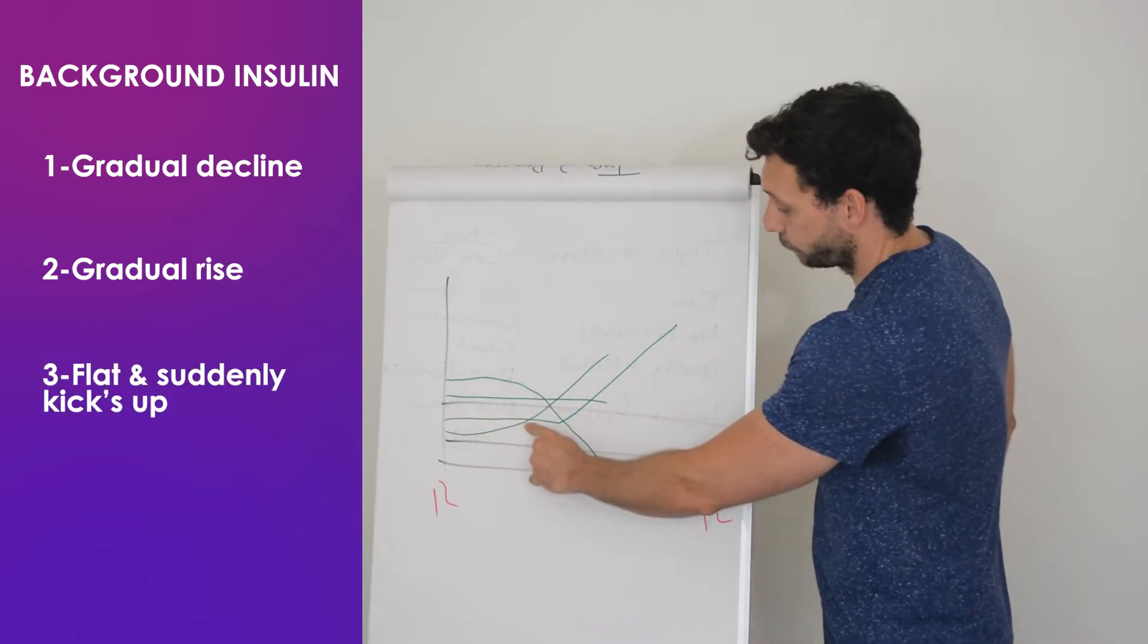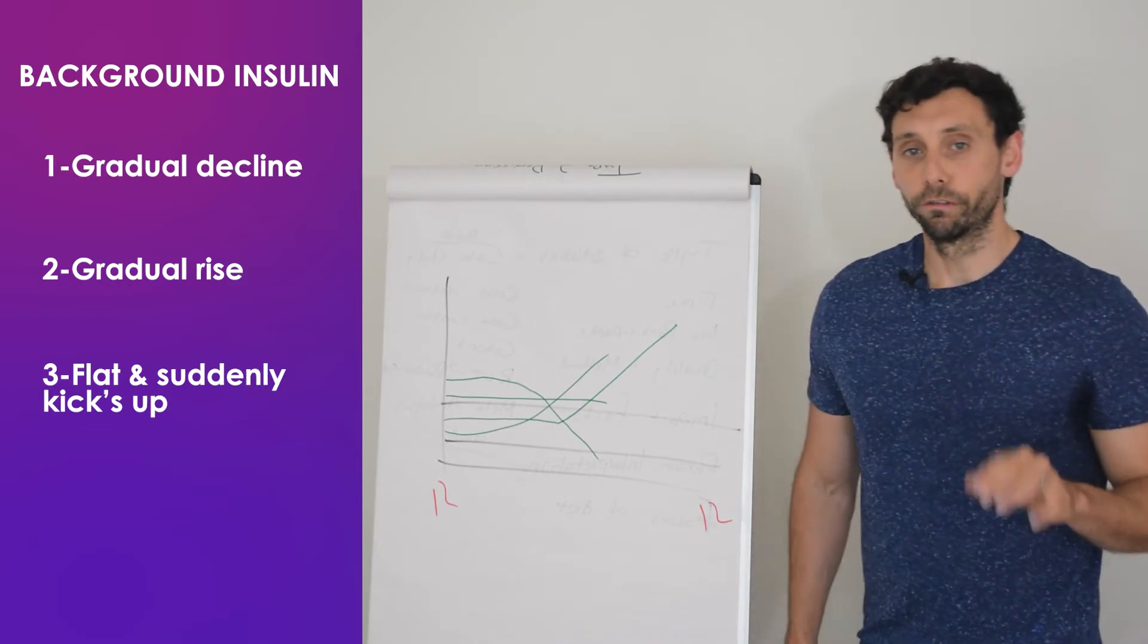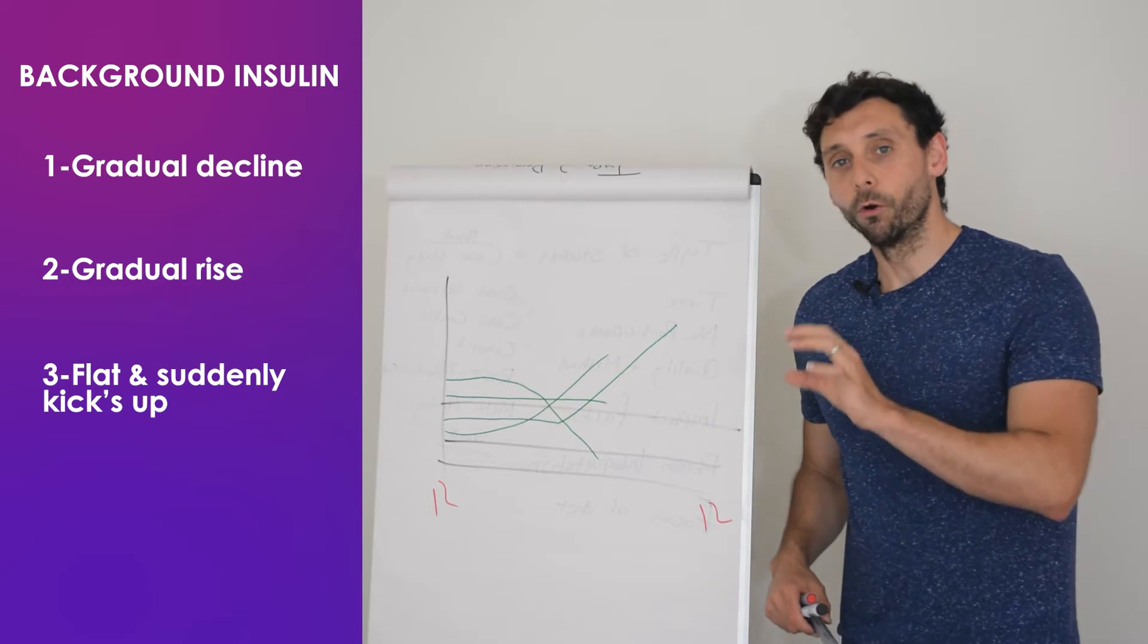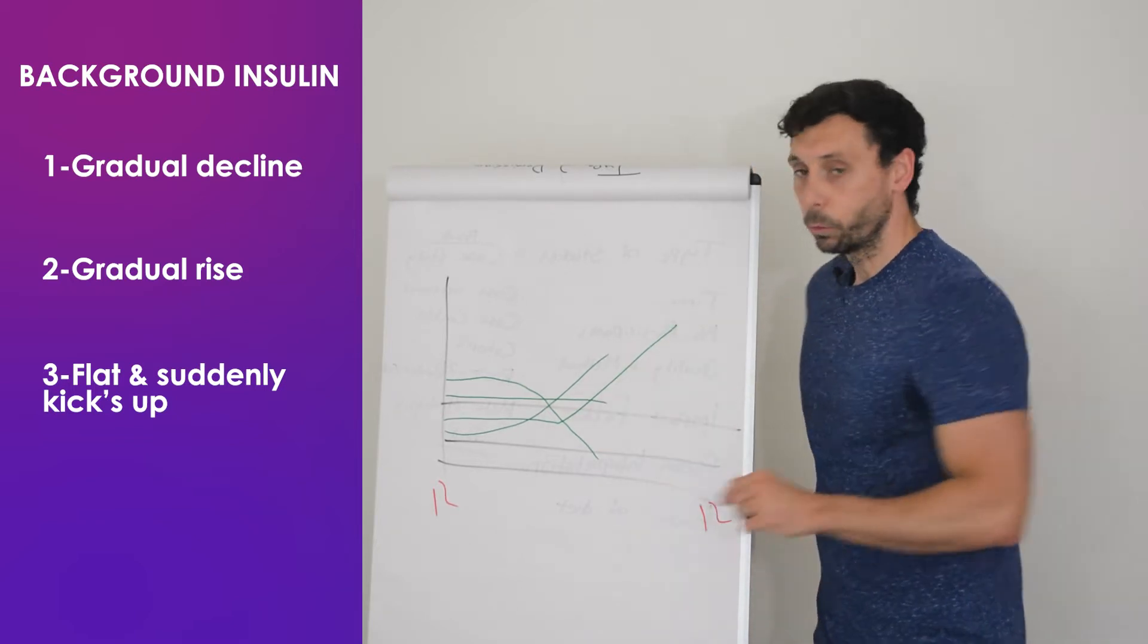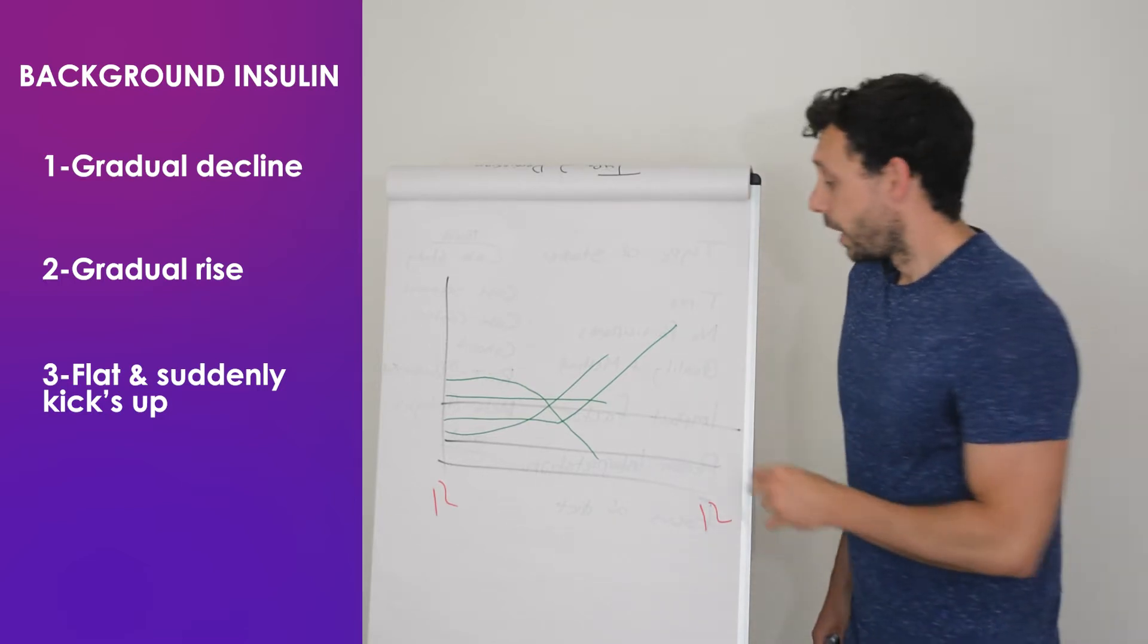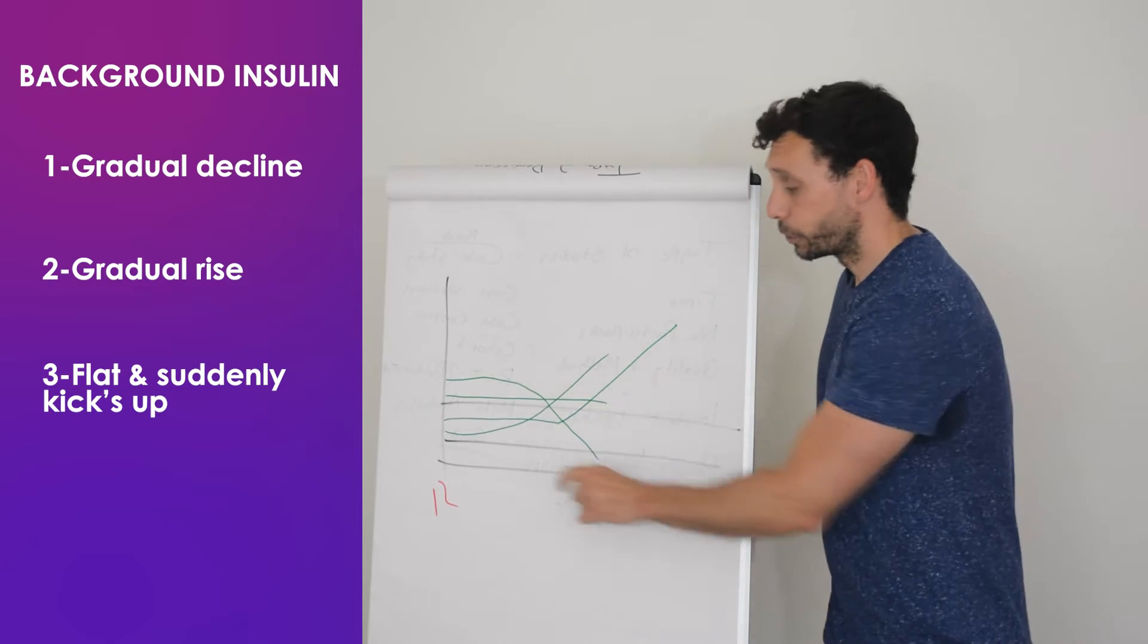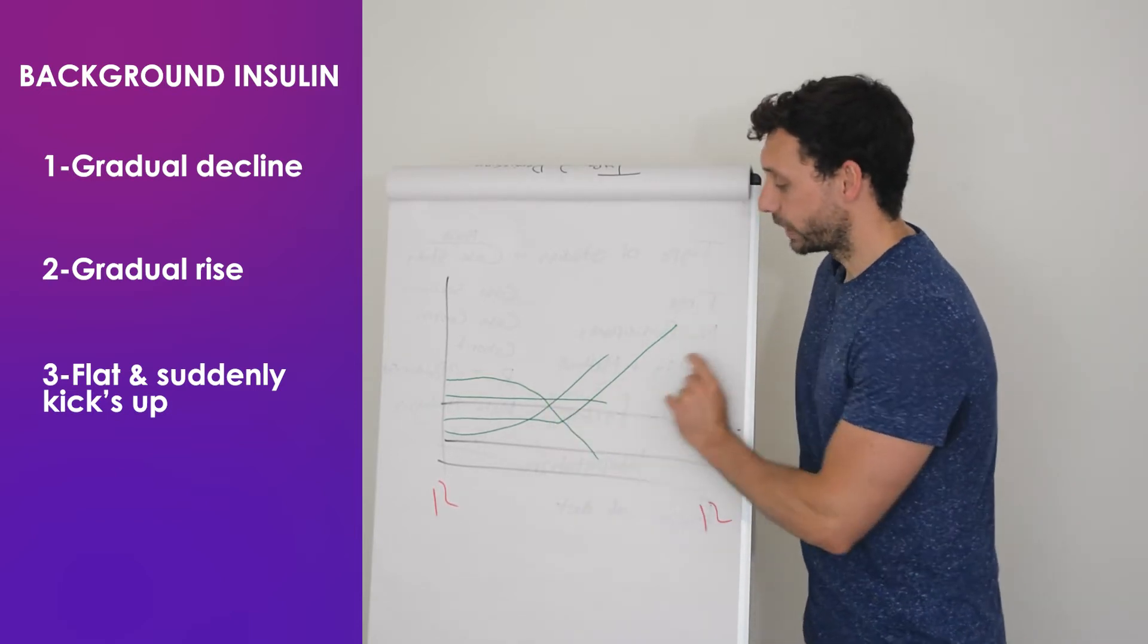Whereas if you see this where it's flat and then it suddenly kicks up, that's hormone related. That's what we call the dawn phenomenon where those hormones designed to get you up in the morning can cause a bit more insulin resistance in your body. And it can be really tricky to manage. You're going to have to wake up and do a correction dose. Or for some people, it is an indication to go on to pump therapy because you can change your background insulin hour to hour. So you can increase the rate to offset that rise.